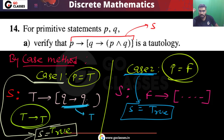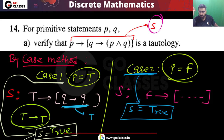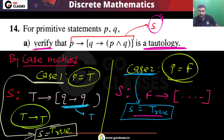Only two cases are possible since P is a proposition. In both cases S is true, so S is true in every case. Therefore S is a tautology. We have verified that this expression is a tautology.